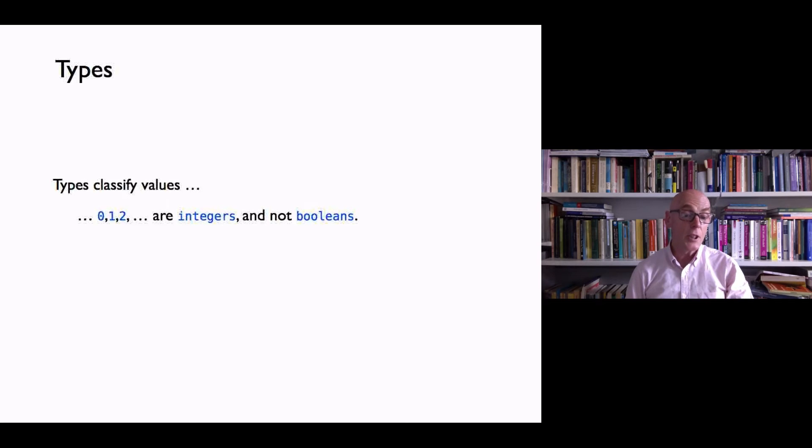We can add two numbers, we can't add two booleans, so we can perform different operations on things of different types. And the functions that we write ourselves can themselves be given types.